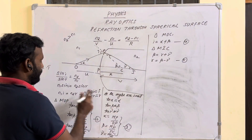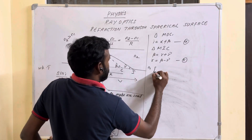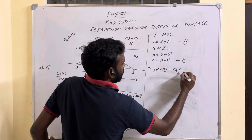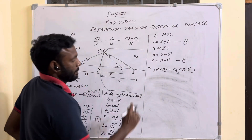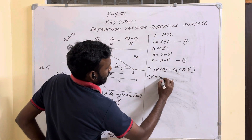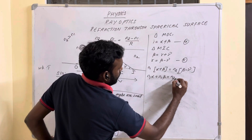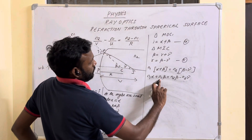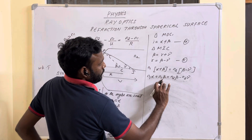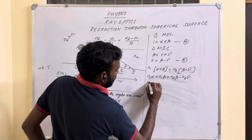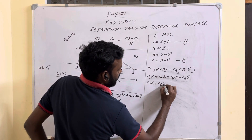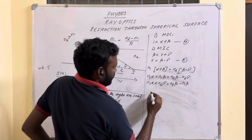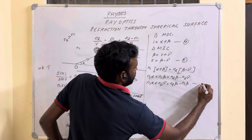Substituting equations 4 and 5 into equation number 1: N1(α + β) = N2(β − γ). Expanding: N1·α + N1·β = N2·β − N2·γ. Rearranging, this equation becomes N1·α + N2·γ = (N2 − N1)·β. Let this be equation number 6.